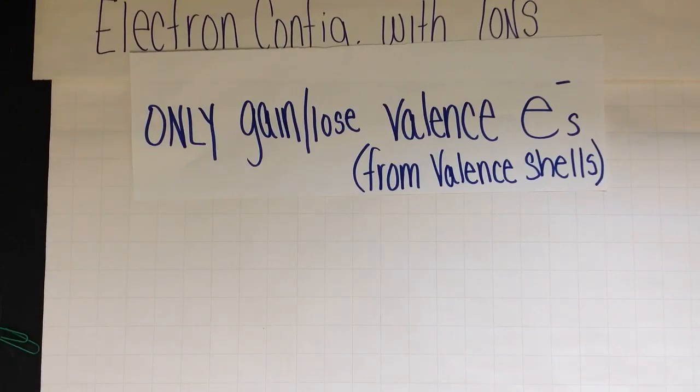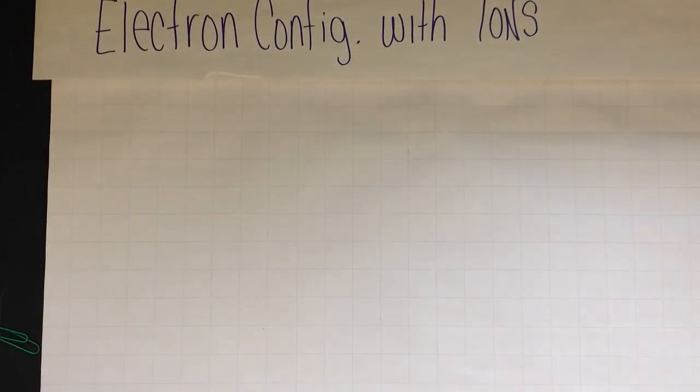Another important thing to remember is that you only gain or lose valence electrons from your valence shell, the outermost shell. That's what a valence shell is. Another word for shell is energy level.